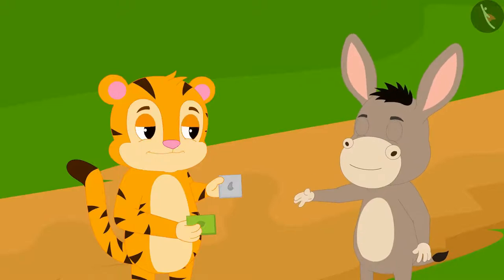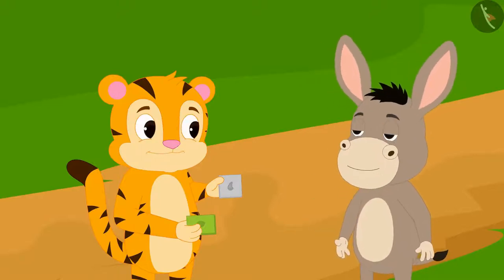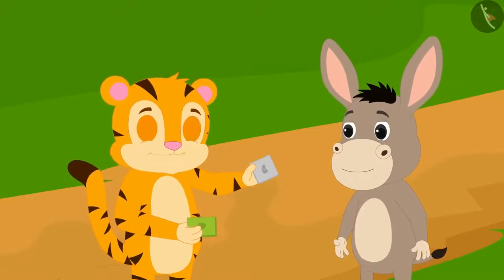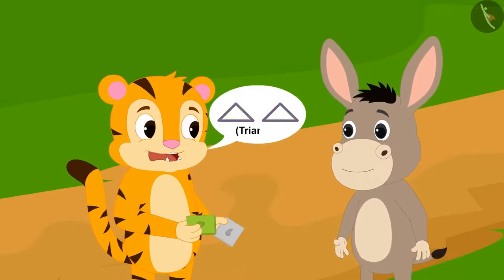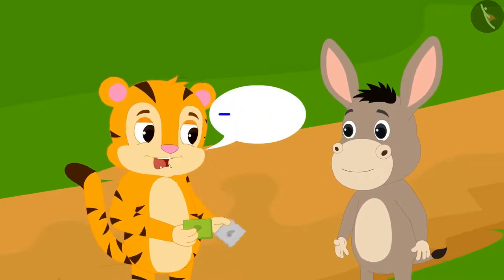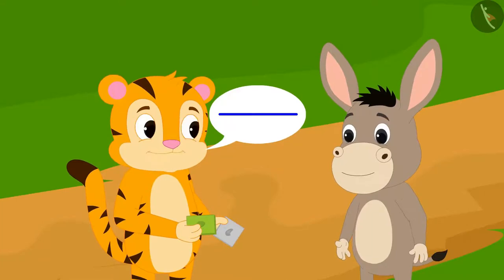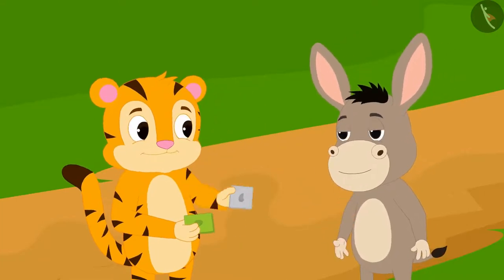Bholla accepted Sher Khan's condition. Can you make this cashew barfi into two triangles of equal area by drawing a straight line? Sher Khan asked Bholla.